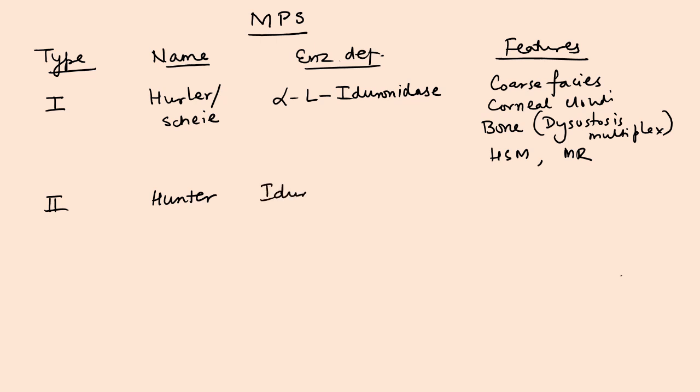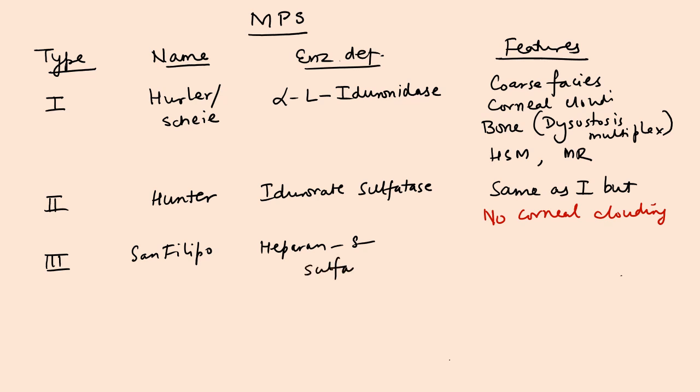What are the clinical features? They have coarse facies. In the previous video I had shown you a picture. Coarse facies, they have corneal clouding, they have bony changes, that is dysostosis multiplex. They have hepatosplenomegaly and they have mental retardation. Type 2 is known as Hunter syndrome.